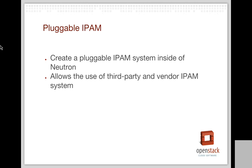Pluggable IPAM has been talked about at various design summits for almost two years. We're really hoping this is the cycle where it works and we've made it one of the priorities. The idea is to create a pluggable IP address management scheme so that third-party and vendor IPAM systems can integrate with Neutron. There's a spec out for review with a lot of comments, but we should be able to get it approved and into Kilo, providing more options for deployers and operators.